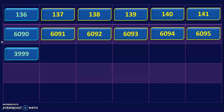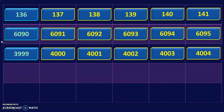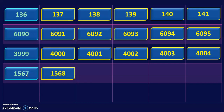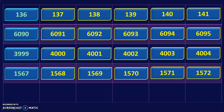Write the series of numbers after 3999. They are 4000, 4001, 4002, 4003, and 4004. The next number given is 1567. The series of numbers after 1567 are 1568, 1569, 1570, 1571, and 1572.